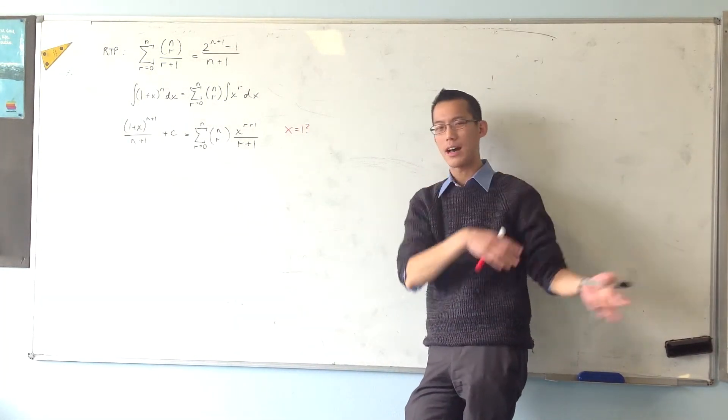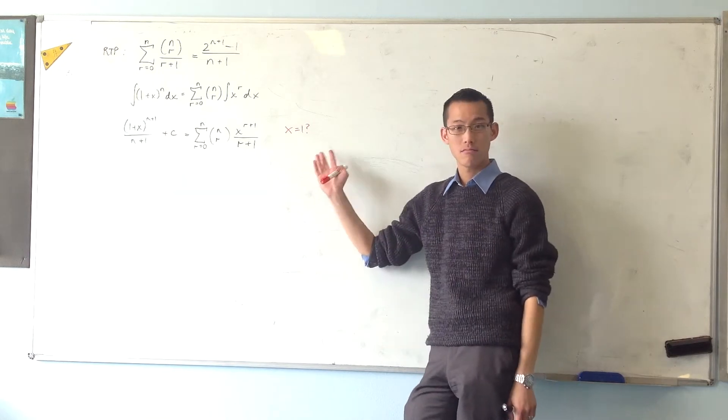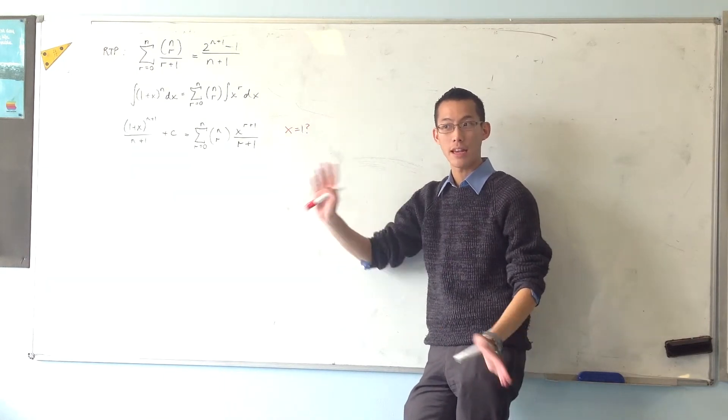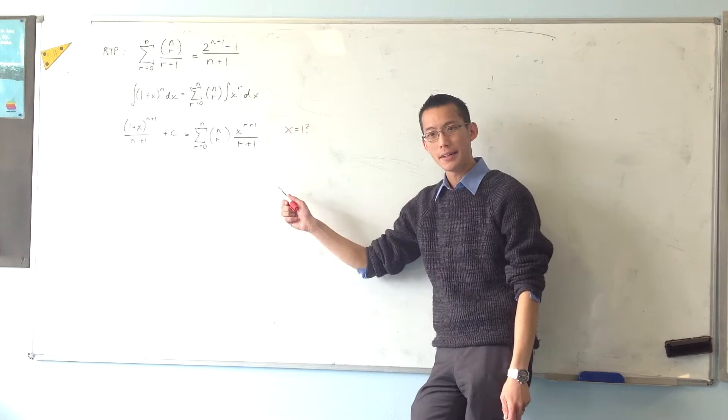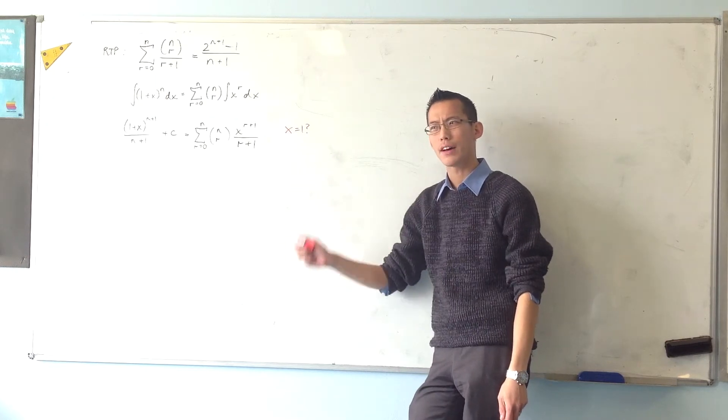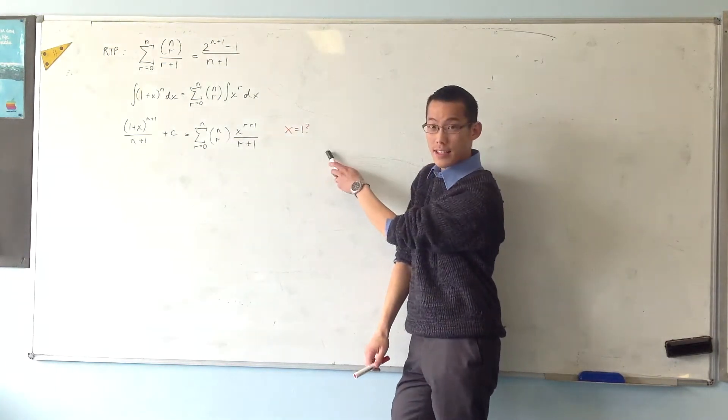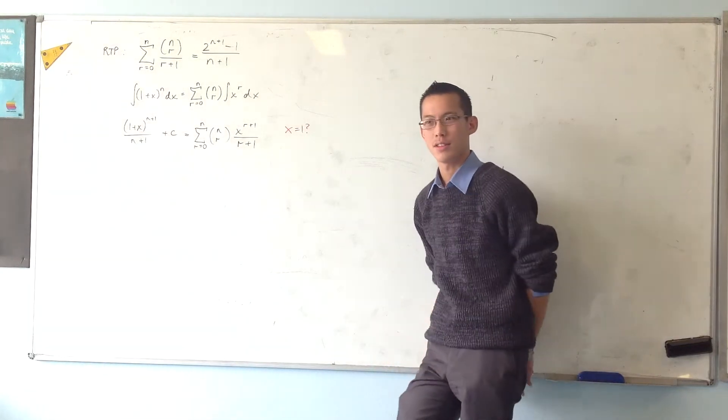Normally when you get a constant of integration out, if you have a value, any value, like initial conditions, or after t equals 5 or whatever, if you pop it in, you'll get the constant out. You can have any set of values. But here, you have to choose a value which works. And in this case, one doesn't, right?